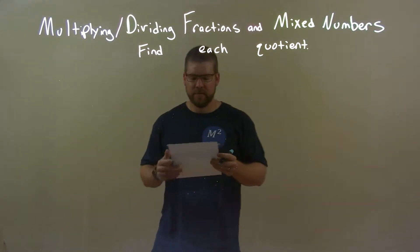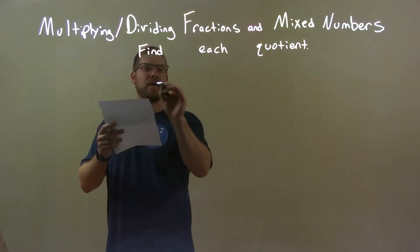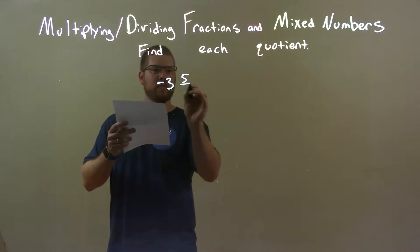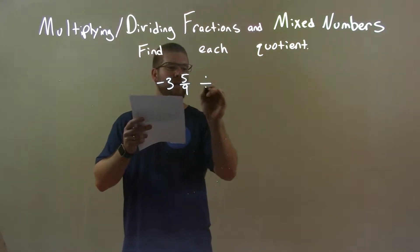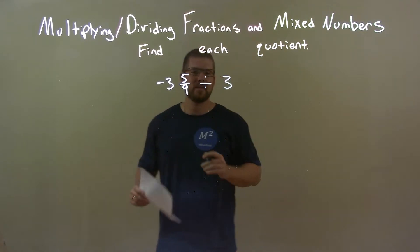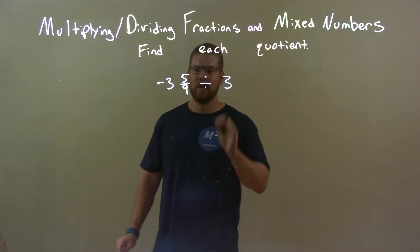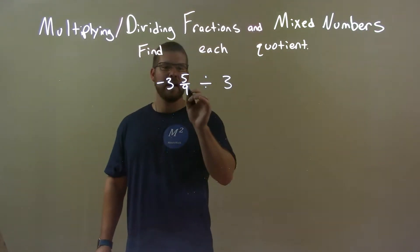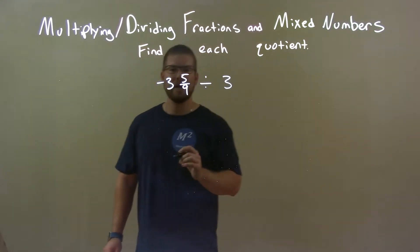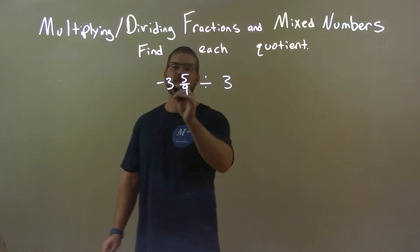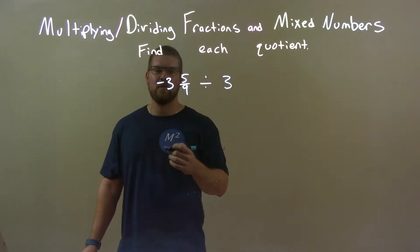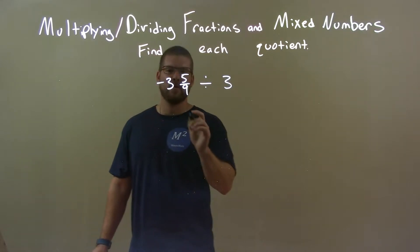So if I was given these numbers, negative 3 and 5 ninths divided by 3. A few things I'm going to do in my next step. I want to convert this to an improper fraction and I don't like dividing. I'm going to make it a multiplication. So 9 times 3 is 27, plus 5, add 5 more on top of that, is 32.